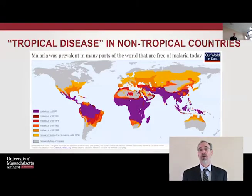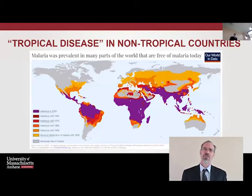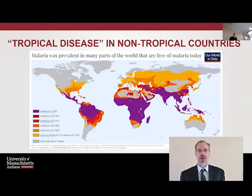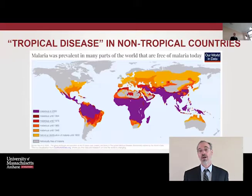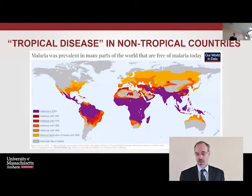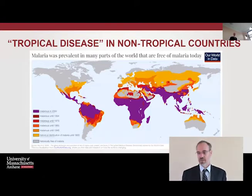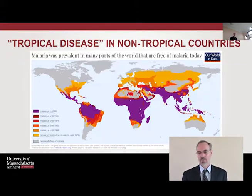As we talked about in the previous lecture, tropical disease is somewhat of a contentious category. Here I want to show you a figure of tropical disease in non-tropical countries. This is a figure of malaria showing the various decades where it was eliminated from each region. You can see that malaria used to extend all the way into areas like New England, Massachusetts, or Michigan, and all the way up to Finland, and has only recently been eliminated from all these regions, but still persists in areas along the equator.